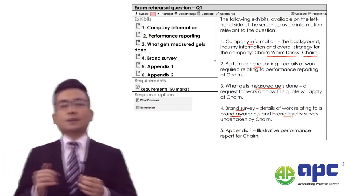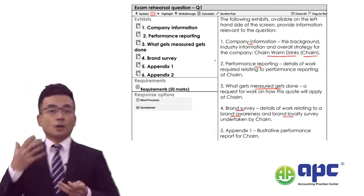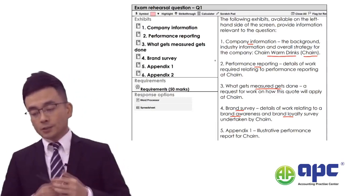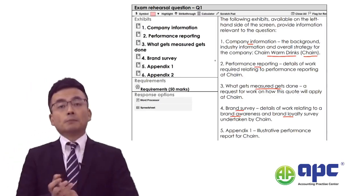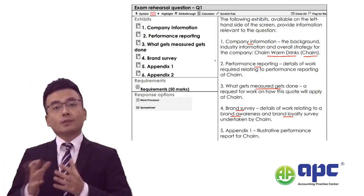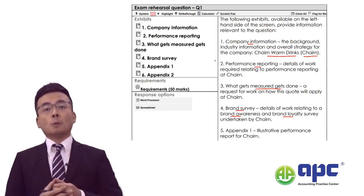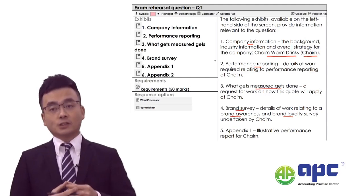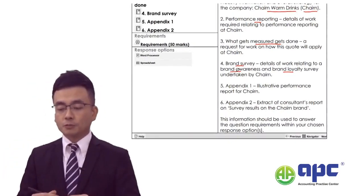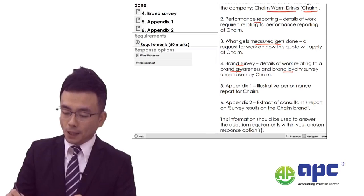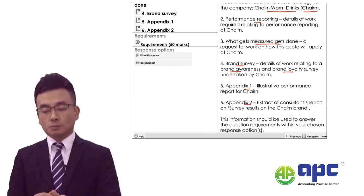When reading that, you need to force yourself to think about subsequent changes in selling price that may affect a customer's buying decision later on. You are also given Appendix 1, the illustrated performance report, and Appendix 2, an extract of a consultant's report on survey results on the brand.